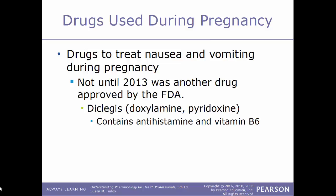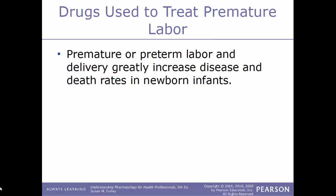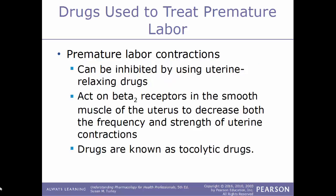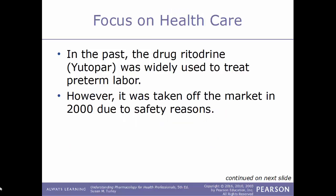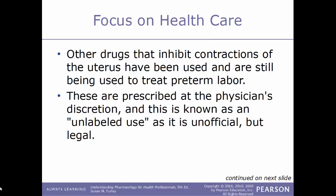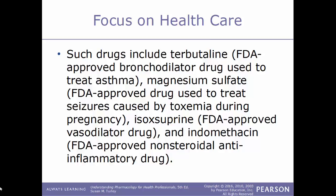Premature or preterm labor and delivery greatly increase disease and death rates in newborns. Premature labor contractions can be inhibited by uterine relaxing drugs, also known as tocolytic drugs, which act on the beta-2 receptors in the smooth muscles of the uterus to decrease the frequency and strength of contractions. The drug ritodrine (trade name Yutopar) was widely used but was taken off the market in 2000 due to safety reasons. Other drugs still used to treat preterm labor as unlabeled use include terbutaline (an FDA-approved bronchodilator for asthma), magnesium sulfate (approved to treat seizures caused by toxemia during pregnancy), isoxsuprine (a vasodilator), and indomethacin (an NSAID).